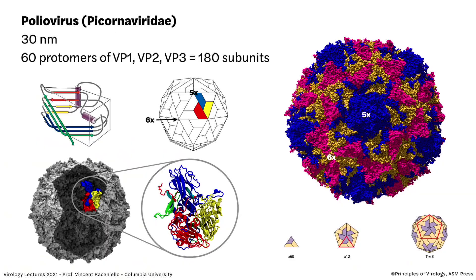An example of a larger particle is poliovirus — a 30-nanometer particle made of 60 structural units composed of VP1, VP2, and VP3, giving 180 total subunits. It's pseudo T=3 because each protein is different, not the same protein 180 times. Here are the three proteins forming the structural unit; five of those go around the five-fold axis. Here's the space-filling view of the particle and the structural unit colored to show how it fits into the overall icosahedral structure.